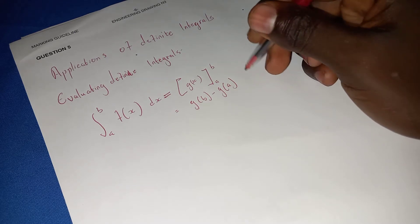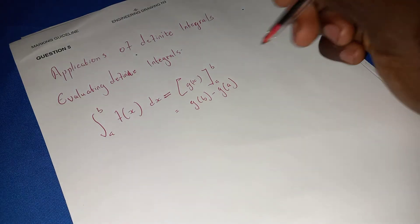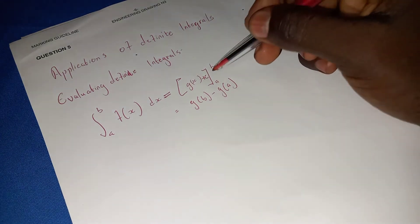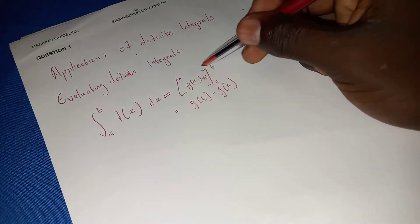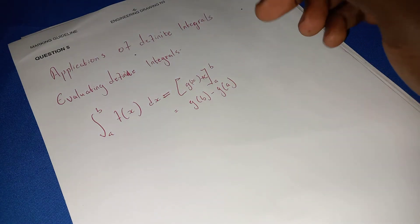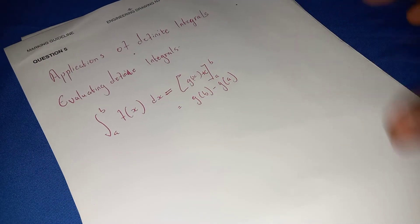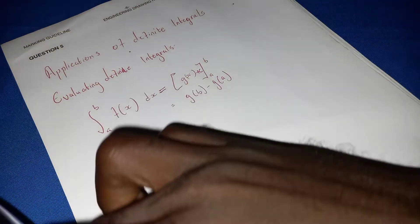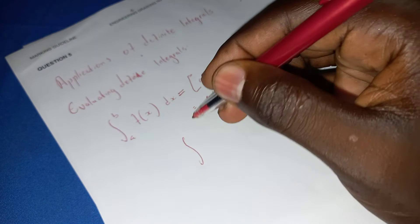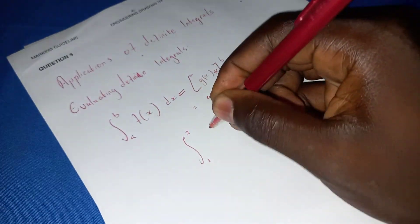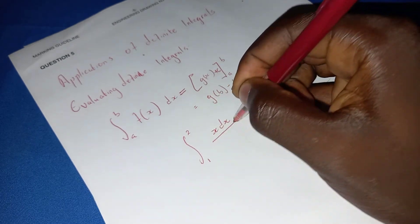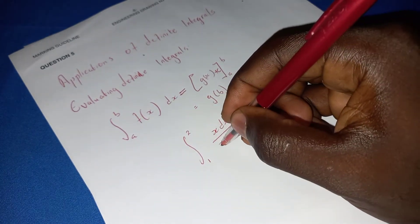You add the constant c to show this is an indefinite integral — the constant comes from the derivative side. Now let's make a quick example on how to calculate. Say you have a question with x dx over three.